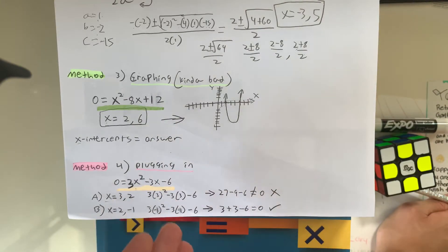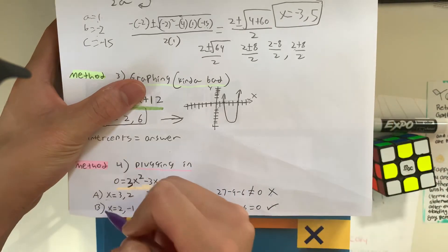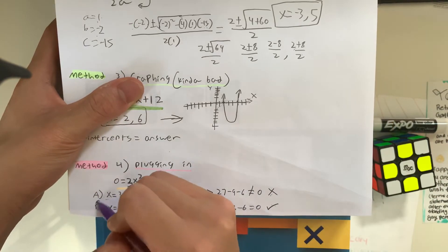In this case, when I plugged in the values of 3 and negative 1, only one of them worked, and it was negative 1, meaning that our answer for method 4 is going to be b.